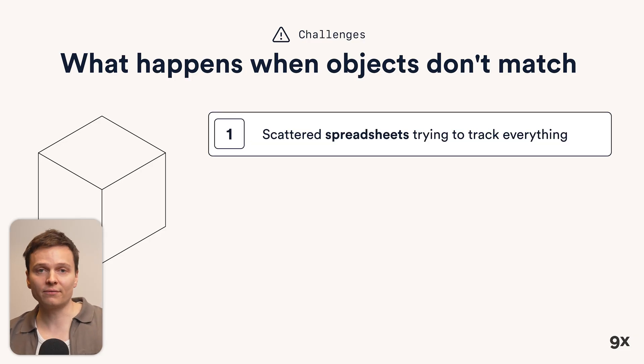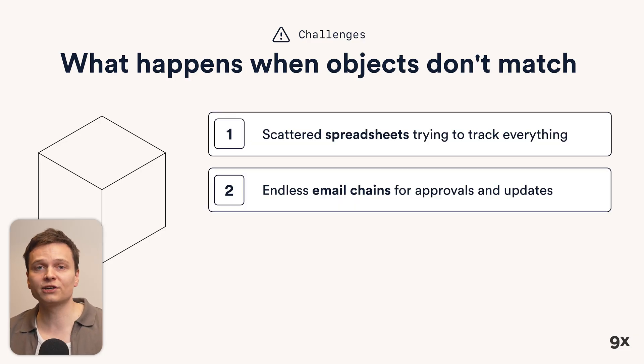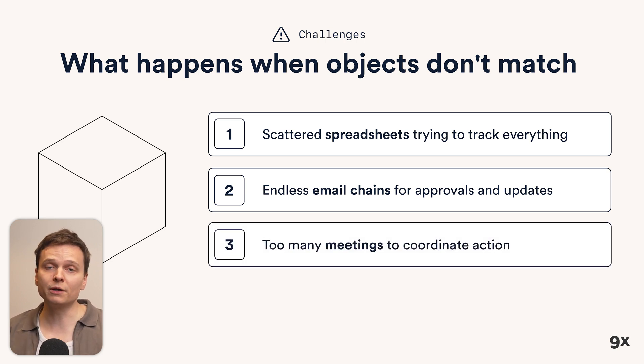When your business processes don't match existing software, you're going to typically end up with: scattered spreadsheets trying to track everything, endless email chains for approvals and updates, or too many meetings to coordinate what should be automated or supported with software. This creates inefficiency, wastes valuable time, and introduces errors that could cost your business. What makes Airtable great is that it lets you define your own objects and functionalities.